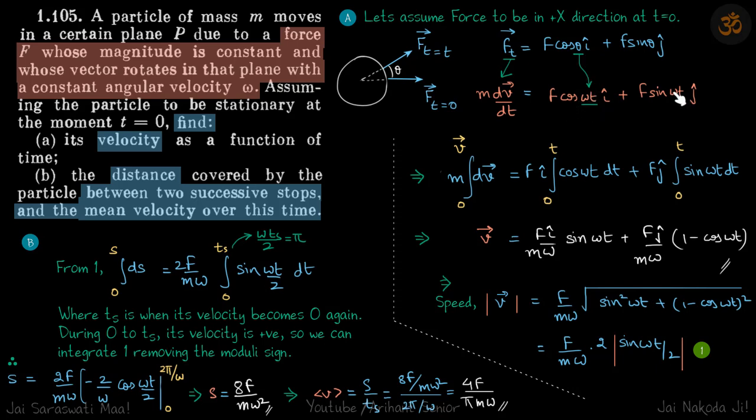So this is our force which we can write as ma or m dv by dt. Now we can find the velocity as a function of time. So this is our first part where velocity we can see is varying with time.